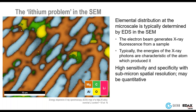On the left hand side here you see an example of an EDS map — actually an overlay of several different elemental maps including magnesium, lithium, and aluminum — from a magnesium-lithium-aluminum alloy. The map reveals a eutectic microstructure with some micron-scale feature sizes.